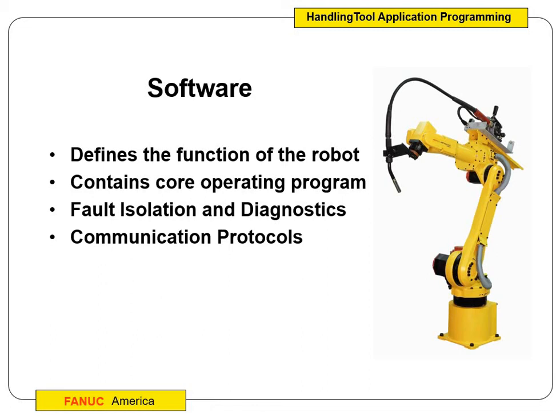The software we're going to be learning is Handling Tool — really cool software, probably one of the easiest programming languages. The language is kind of hidden behind the scenes in terms of C; you don't actually have to write any code. You're literally teaching the robot points of where to move and what to do when it's there. We get into some basic loops and things like that, but the programming is very easy — the syntax is basically automatic when you hit a button.